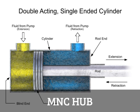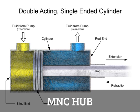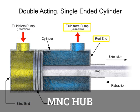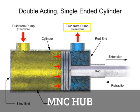A double-acting cylinder is a cylinder in which fluid acts on both sides of the piston. This type of cylinder can produce linear motion in two directions. A double-acting cylinder has two fluid ports, one on the blind end and one on the rod end. A directional control valve sends fluid through the blind end port while venting fluid out the rod end port back to the tank. Pressure builds up and generates a force on the piston, causing the extension stroke.